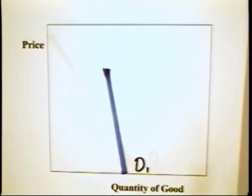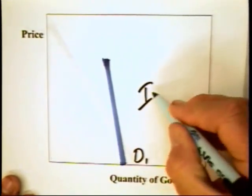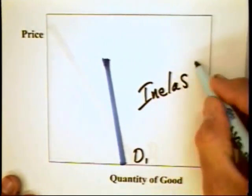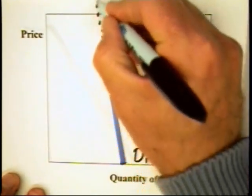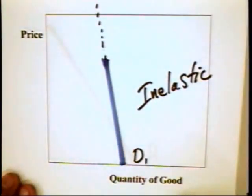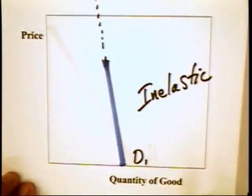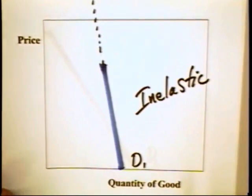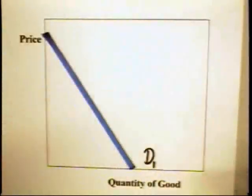If we were to look at a graph that looks like this, we might describe this demand as inelastic. And we do so because, again, if you can imagine extending the demand curve on up until it hits the vertical axis, you would recognize that we are in the lower half of the demand curve and as a consequence, we are in the inelastic range of that demand curve.